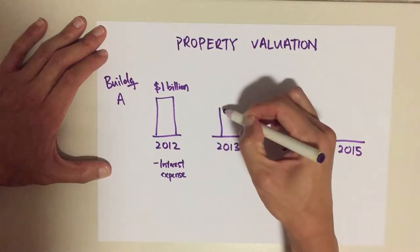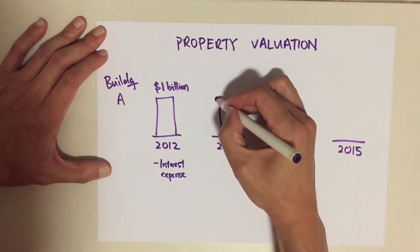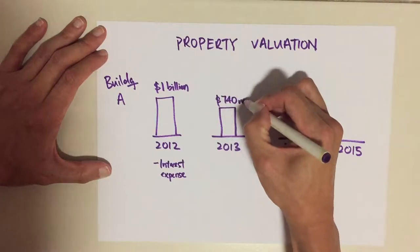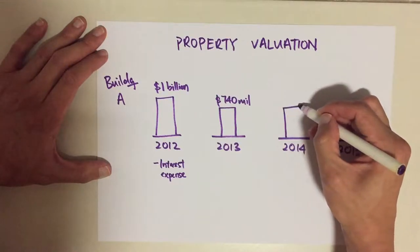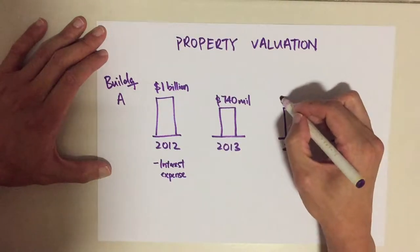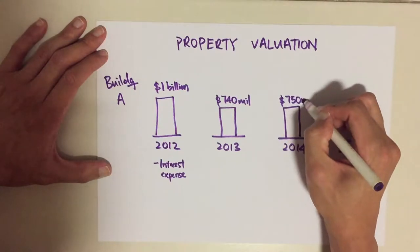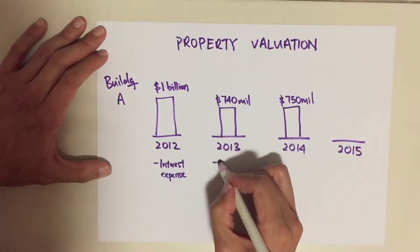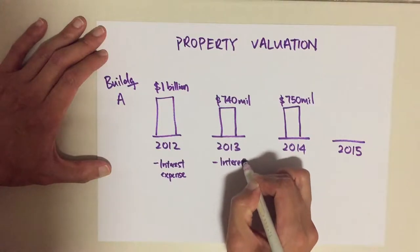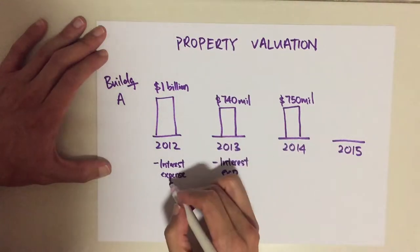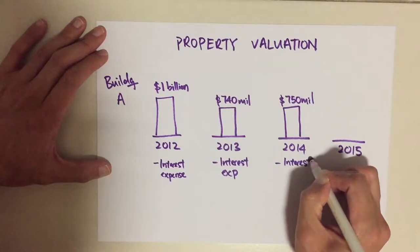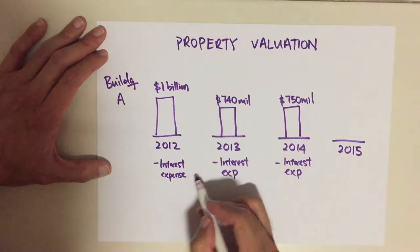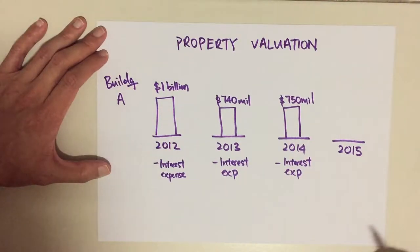So then the next year, maybe it was a bad year, it went down to 740 million, then maybe over at the same stage it was at 750 million. Still, in 2013 and 2014, there's still the interest expense due to the borrowings. So all these are outflows from the REIT structure itself.